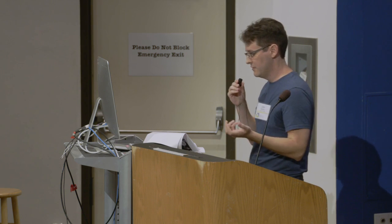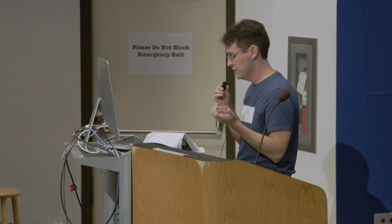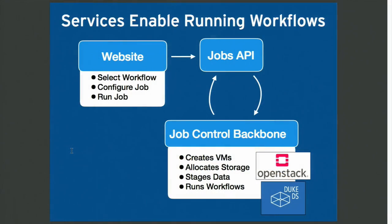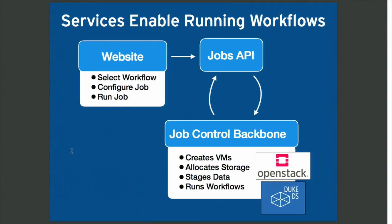Bespin is made of several services for running these workflows. The website allows a researcher to select a workflow, configure and run jobs. The jobs API provides REST endpoints used by the website to manage the jobs. The job control backbone communicates with OpenStack, creating a VM for each job and attaching appropriate storage. The backbone also shepherds the VM through staging data from our institutional data store and running the CWL workflow.